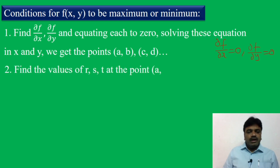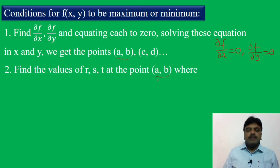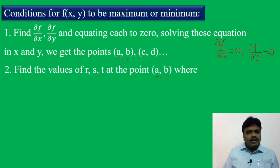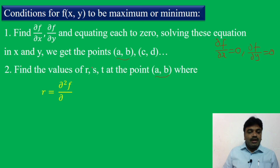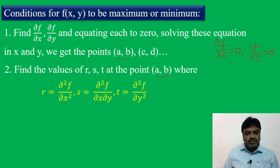Second step: find the values of r, s, t at the stationary points (a,b). The notations are very important: r = ∂²f/∂x², s = ∂²f/∂x∂y, and t = ∂²f/∂y².